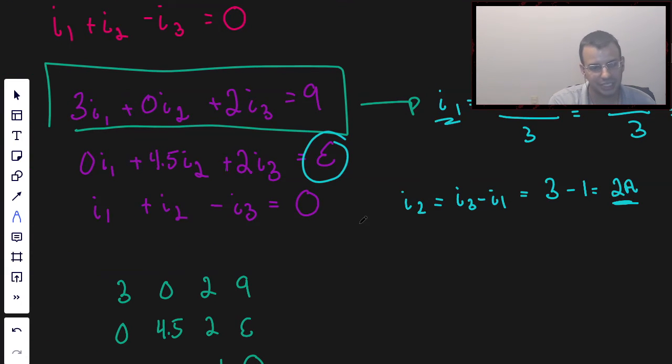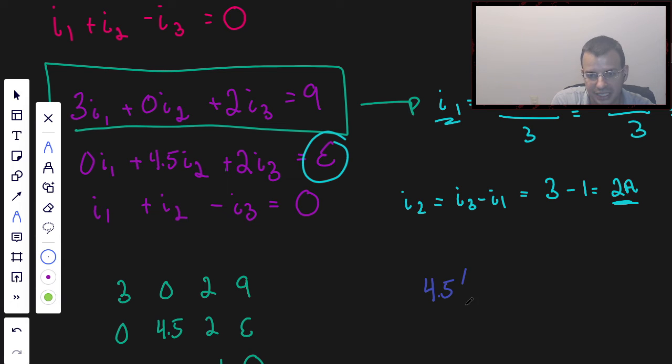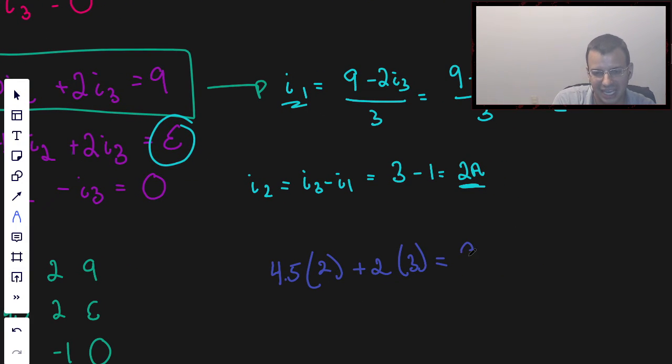So now we have all the data we need to solve this middle equation. So we're going to do 4.5 times I2, which is 2, plus 2 times I3, which is 3. And this gives us 4.5 times 2, which is 9, plus 2 times 3, which is 6. 9 plus 6 is 15. This is going to be a measure of voltage, so it's 15 volts.